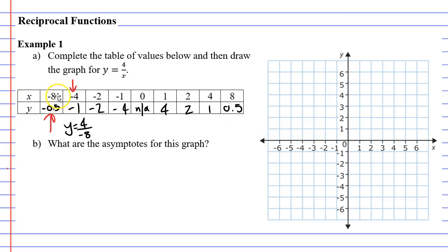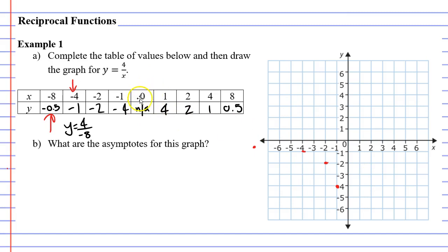When x is negative 8, y is negative 0.5. I don't have negative 8 on the graph but I've got negative 7, and we know negative 8 is just one step to the left of that, so we'll guesstimate where that goes. When x is negative 4, y is negative 1. When x is negative 2, y is negative 2. When x is negative 1, y is negative 4. Then you don't get anything when x is 0.